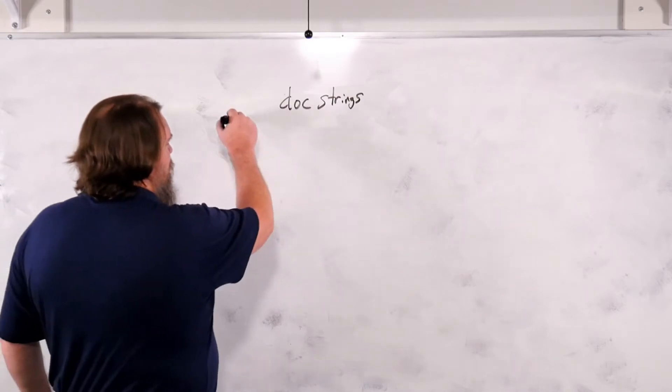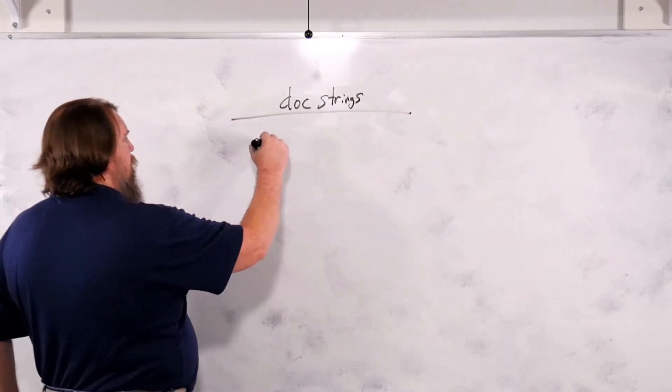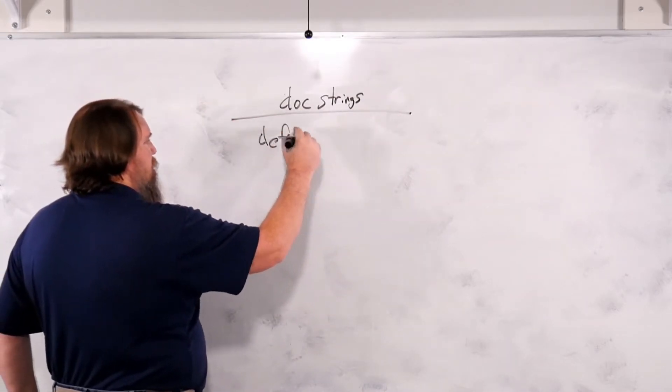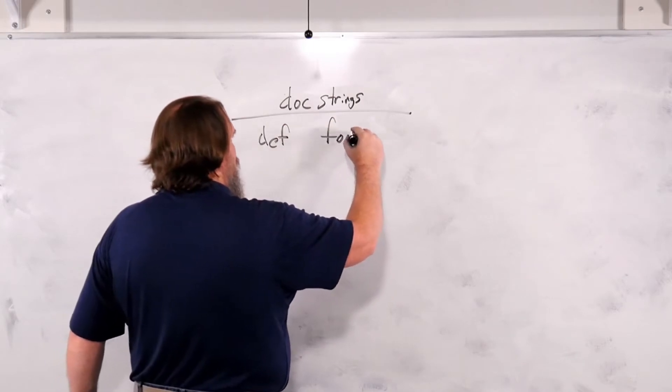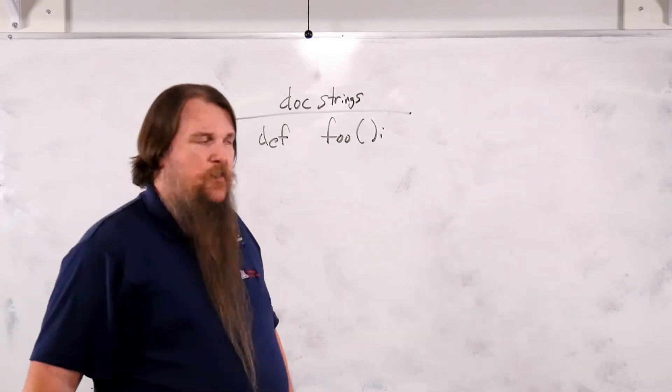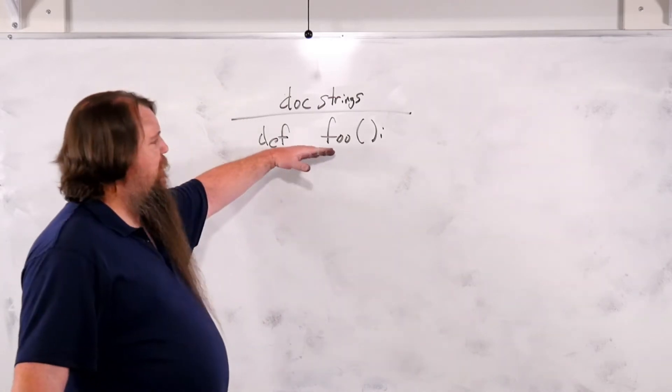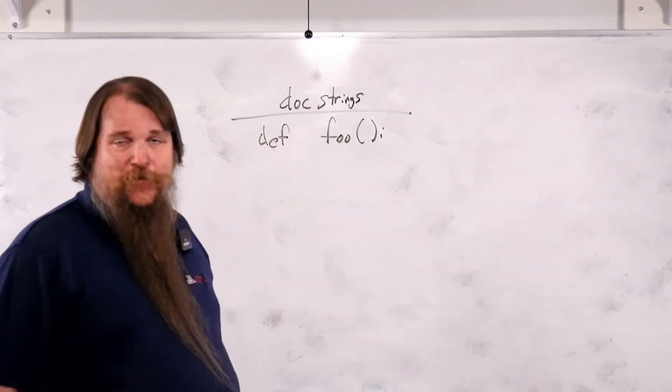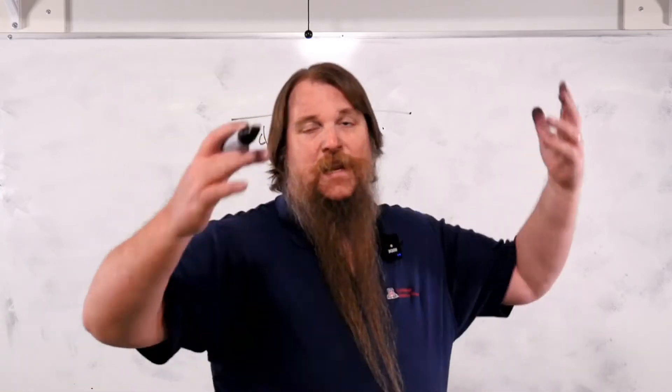Easiest way to do this is to look at a function. So def foo, alright, here's the declaration of a function. So far the functions we've been writing don't have any doc strings, they just go right into the code.